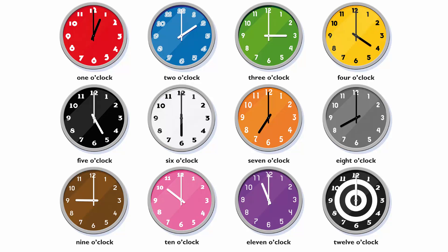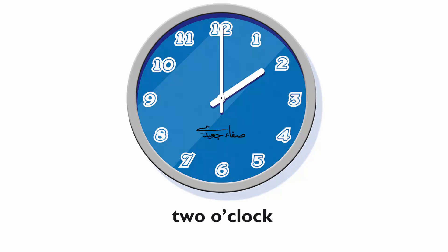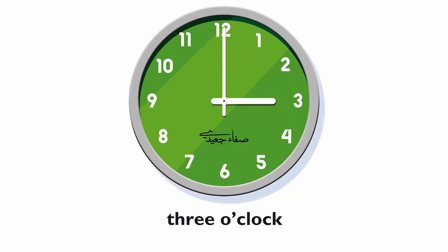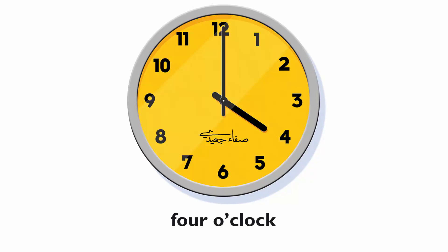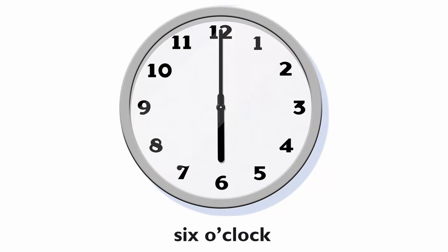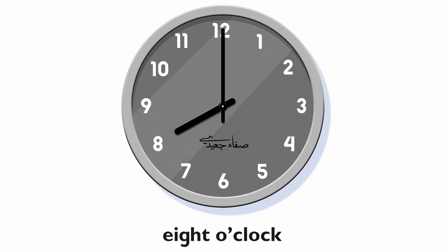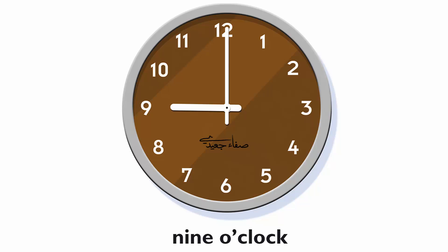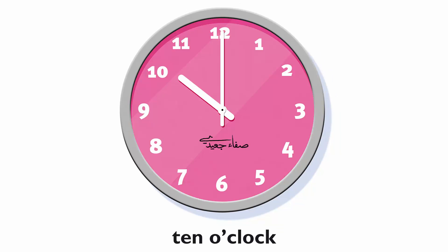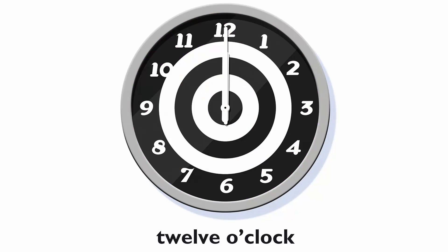What's the time? It's one o'clock. It's two o'clock. It's three o'clock. It's four o'clock. It's five o'clock. It's six o'clock. It's seven o'clock. It's eight o'clock. It's nine o'clock. It's ten o'clock. It's eleven o'clock. It's twelve o'clock.